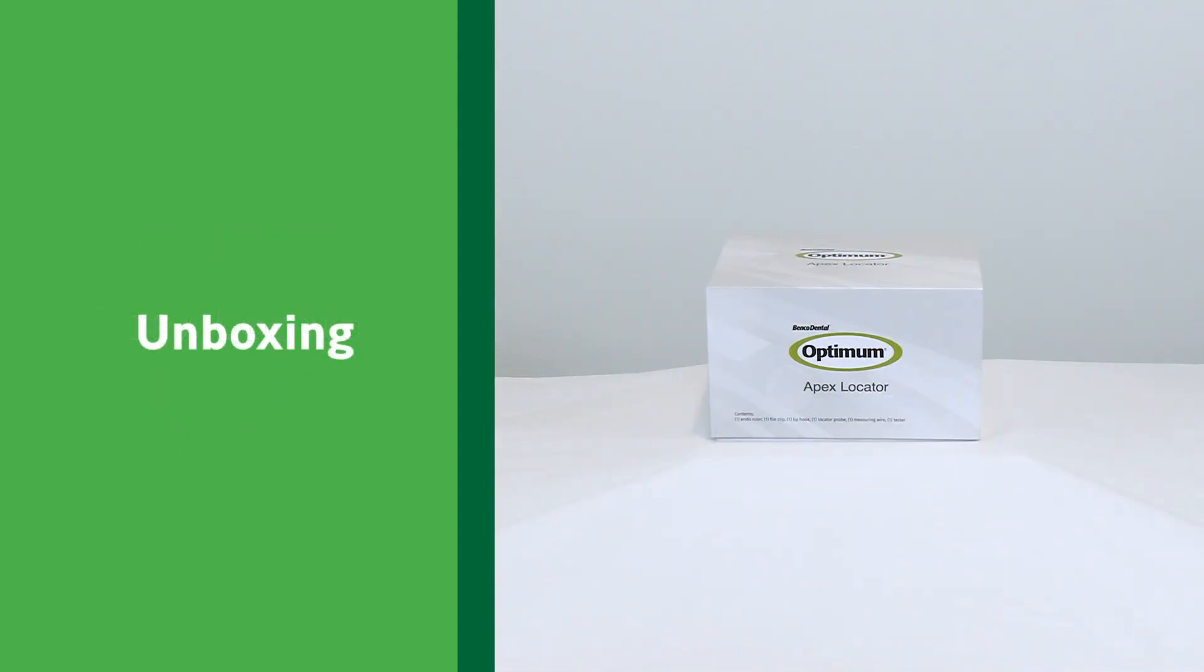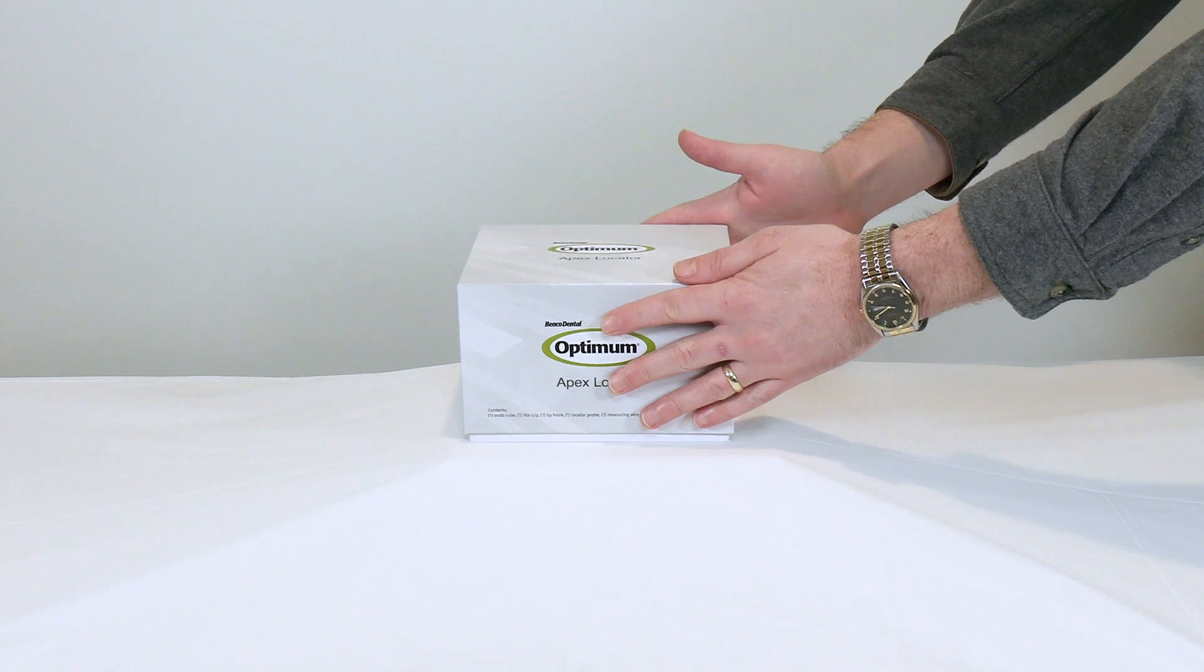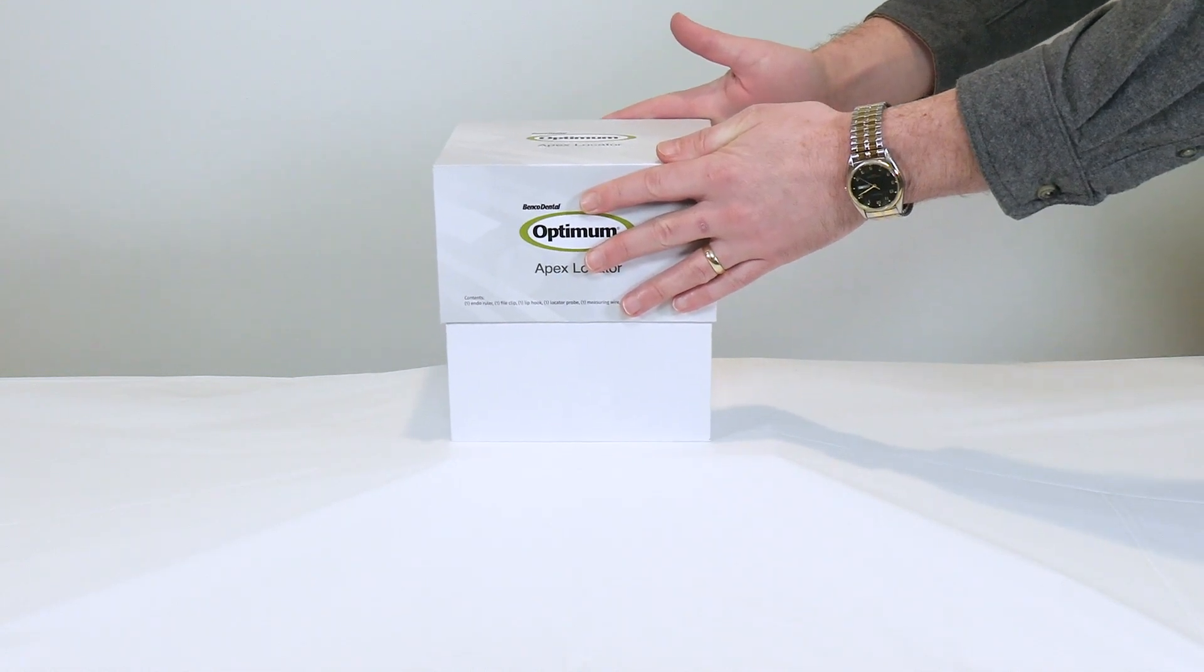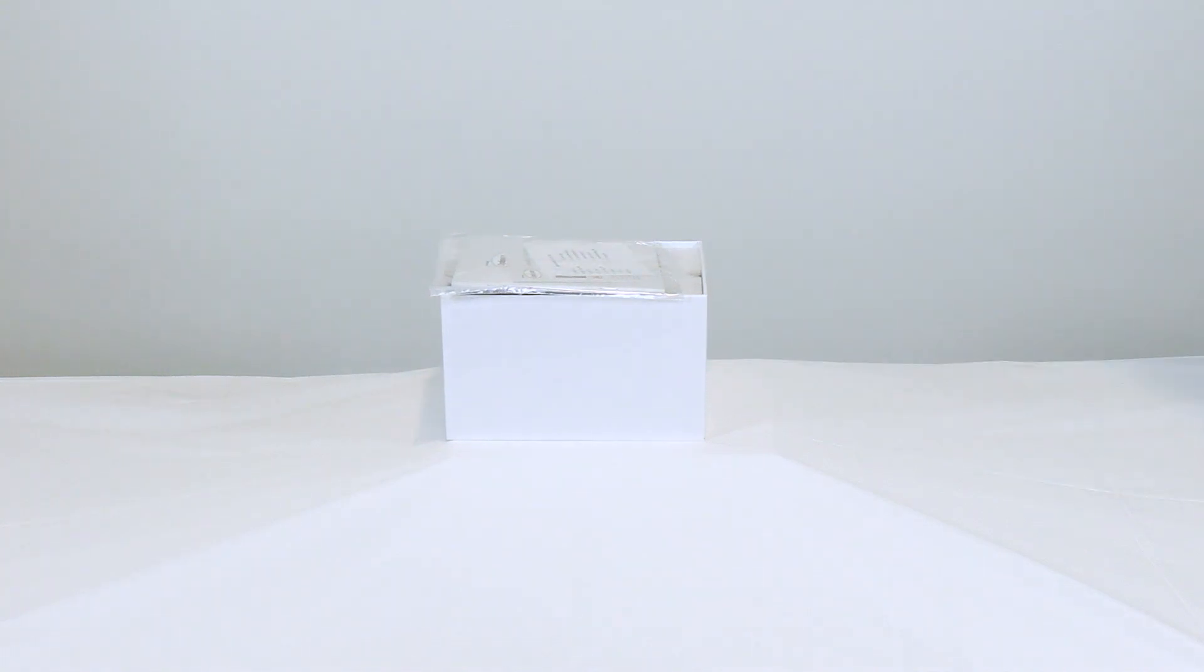Unboxing. To begin setting up your Optimum Apex Locator, first open the box which contains the locator unit and all main accessories.